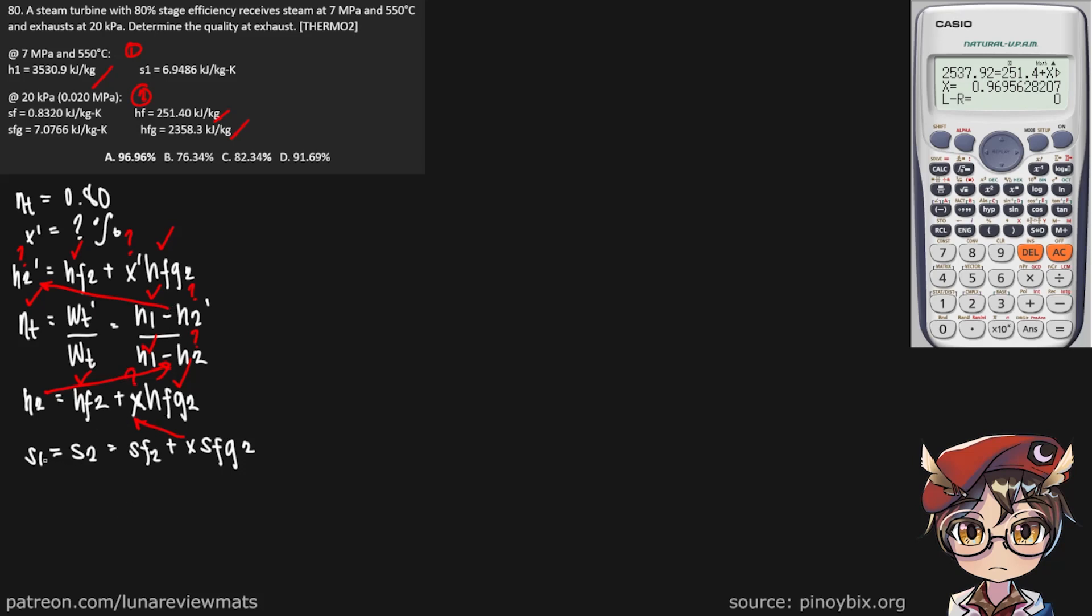S1 is equal to S2, it's already given over here. SF2 is also here, given already. SFG also here. So we can find X using shift-solve. Now, this should be equal to 0.8643.